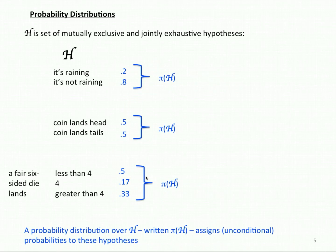For this trio, π assigns less than 4 to 0.5, 4 to 0.17, and greater than 4 to 0.33.